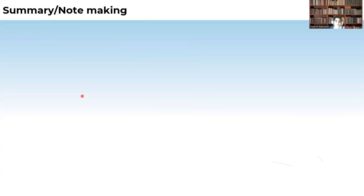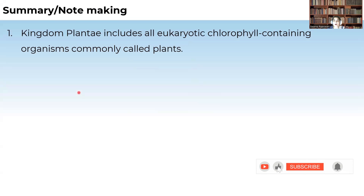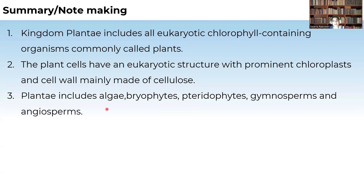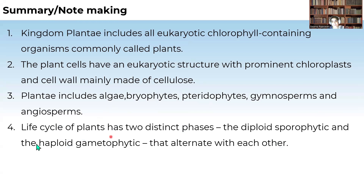Now let us summarize the entire video. Kingdom Plantae includes all eukaryotic, chlorophyll-containing organisms commonly called plants. Plant cells have eukaryotic structure with prominent chloroplasts, and the cell wall is made up of cellulose. Plantae includes algae, bryophytes, pteridophytes, gymnosperms, and angiosperms. The life cycle of plants contains two distinct phases: the sporophytic stage, which is diploid, and the gametophytic stage, which is haploid. These two stages show what is called alternation of generations.